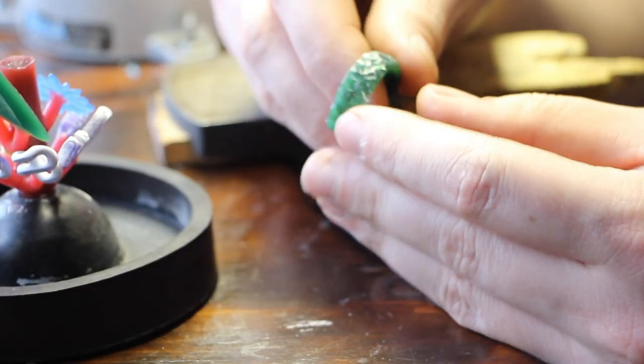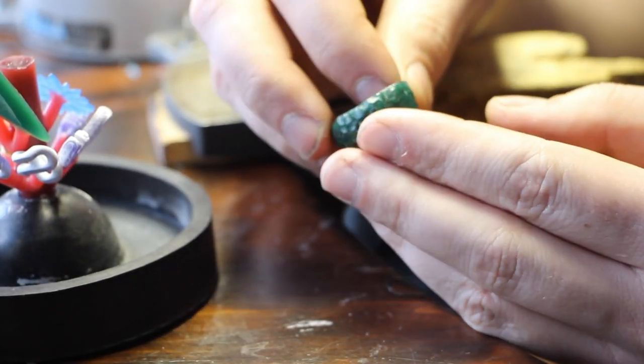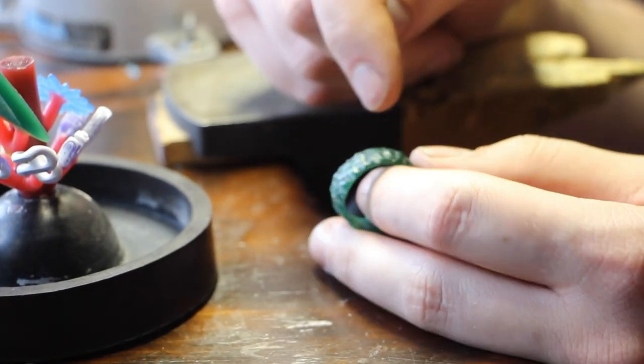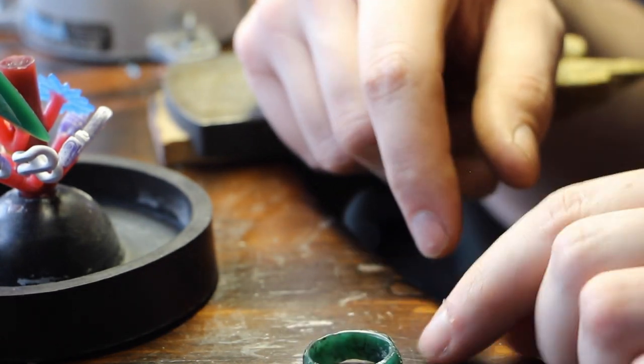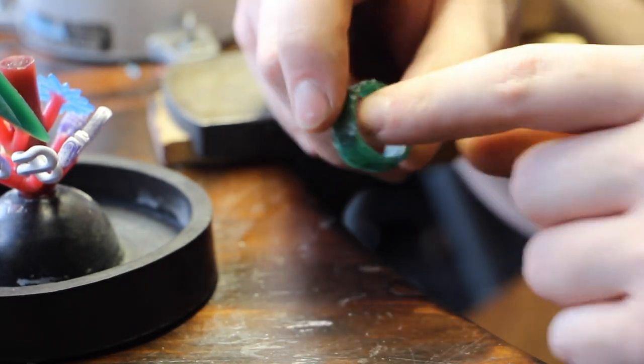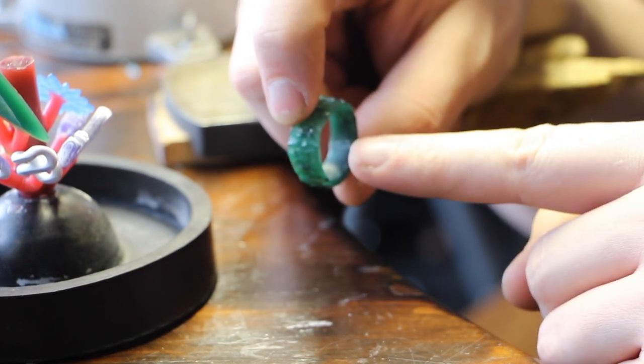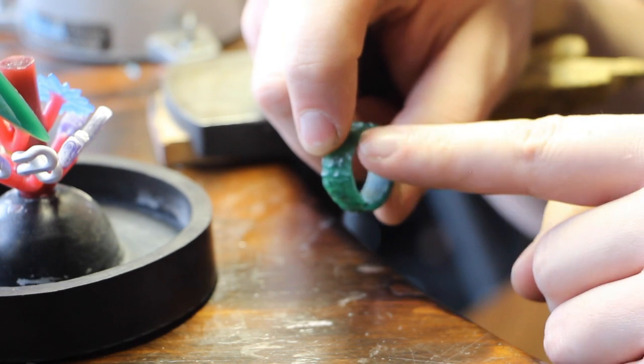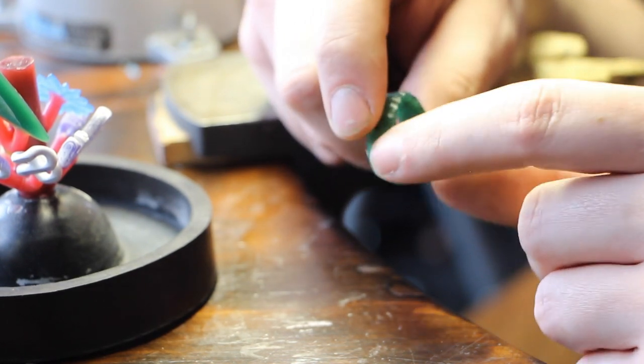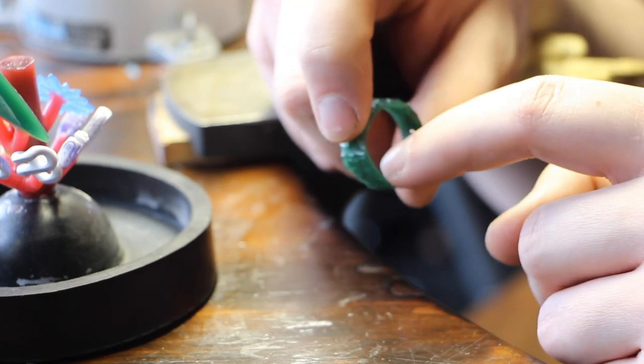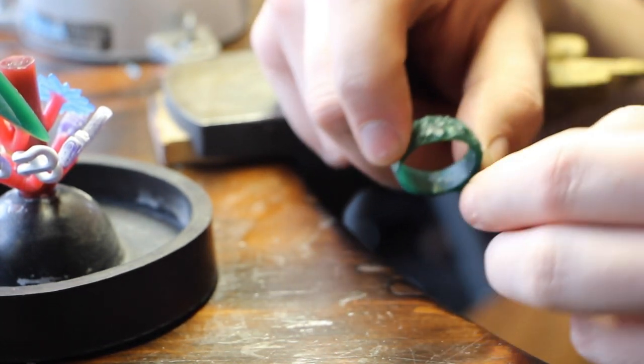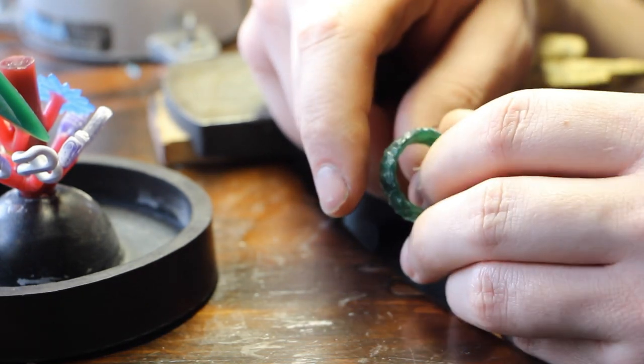When I go to sprue these rings, you see how I've got texture all the way around it. What I'm going to do to avoid ruining the texture that I've spent so much hard work and effort on is I'm going to sprue it from the inside. I'm going to have a single sprue come in, and then it's going to split off into a V, or maybe even three sprues. That's going to go to the inside of the ring. So I can just take a half round file, file that back when it's all cast in metal, and give it a nice polish.